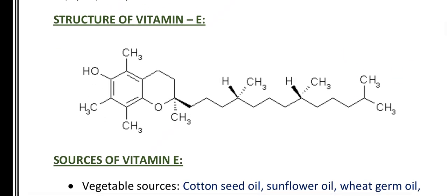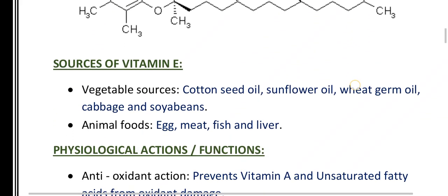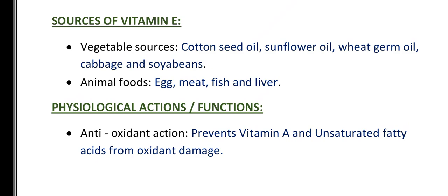This is the structure of vitamin E. Now coming to sources of vitamin E. There are two sources: vegetable source and animal foods. Vegetable sources include cotton seed oil, sunflower oil, wheat germ oil, cabbage, and soya beans. From animal foods, vitamin E is obtained from egg, meat, fish, and liver.